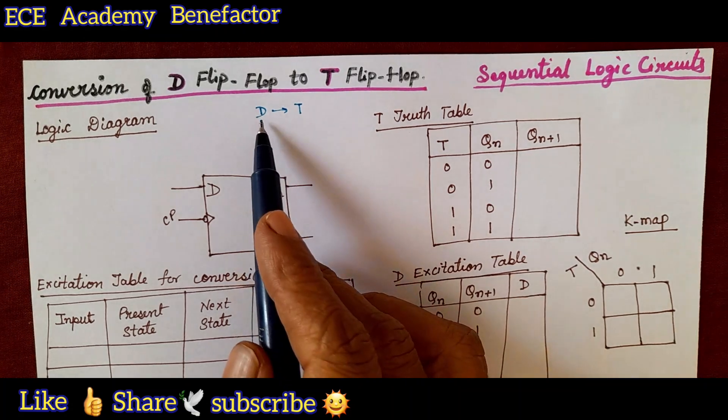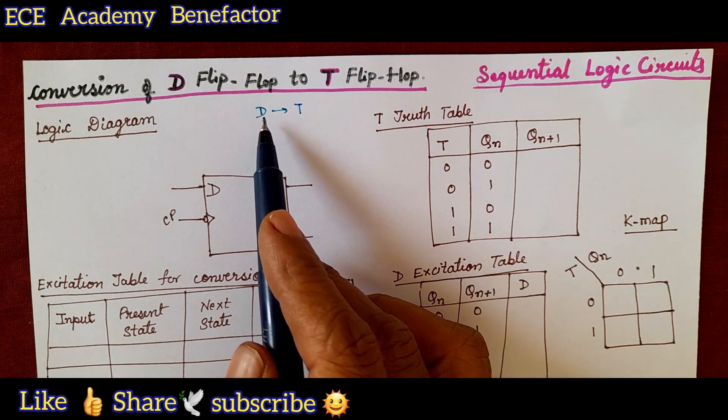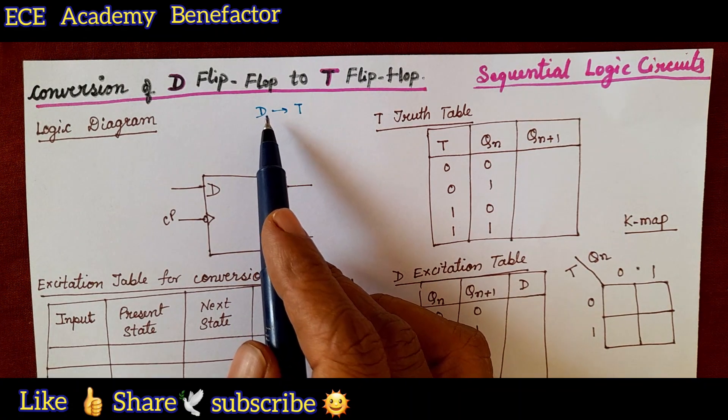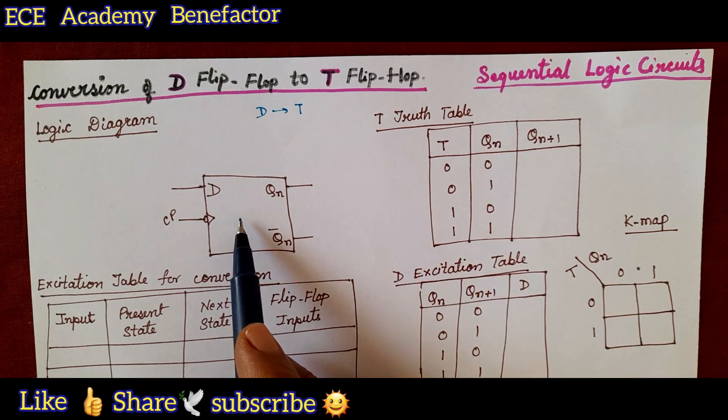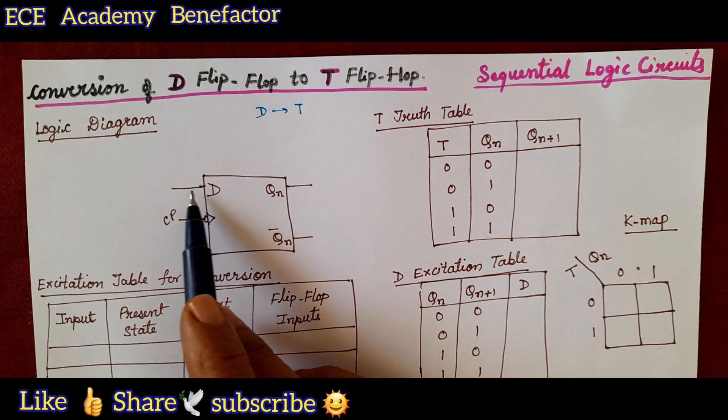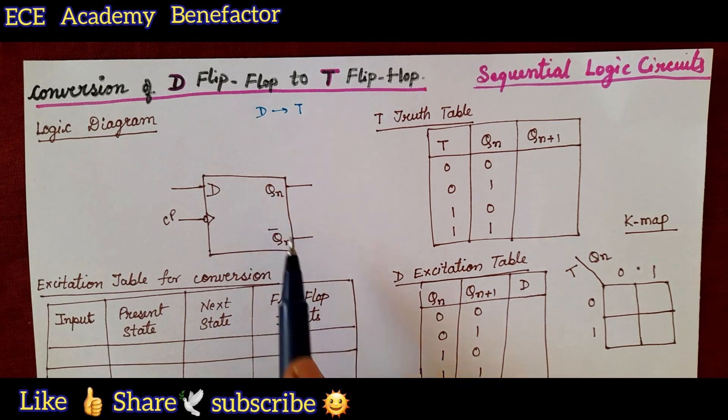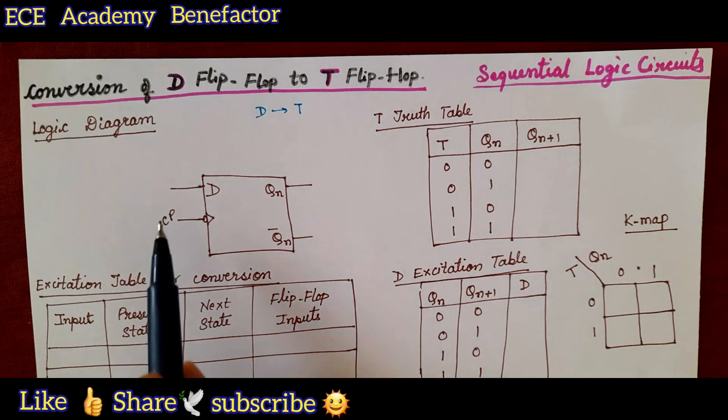What is given to us? D is given to us, D flip-flop is given to us. We have drawn the logic diagram of that D flip-flop. D is having single input and two outputs Q and Q n bar and clock pulse.